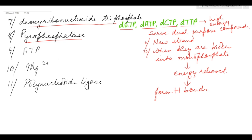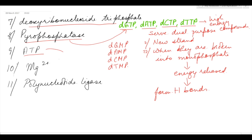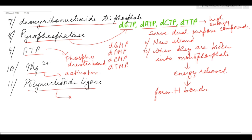Next, pyrophosphates help in breaking the triphosphates into monophosphates so that they can be added into the DNA strand. ATP is used for the formation of phosphodiester bonds that hold adjacent nucleotides together. Magnesium ions act as activators of enzymes. Next, polynucleotide ligase is required for the joining of fragments.